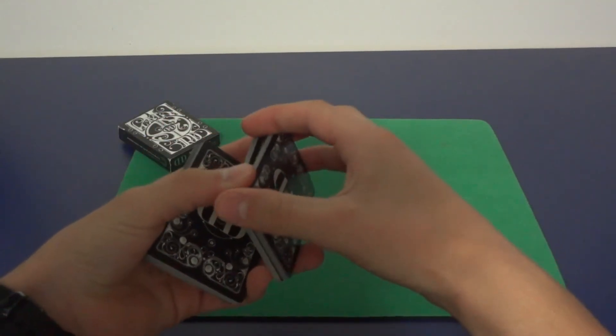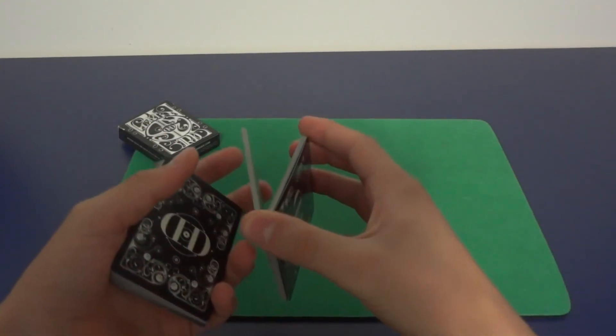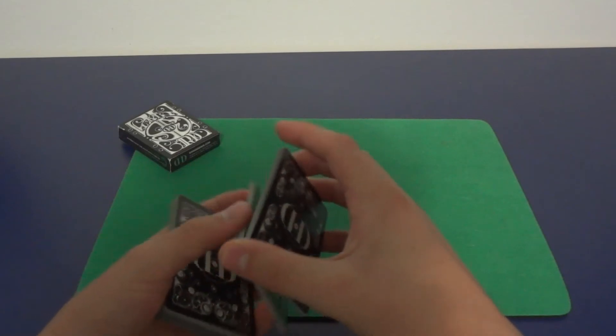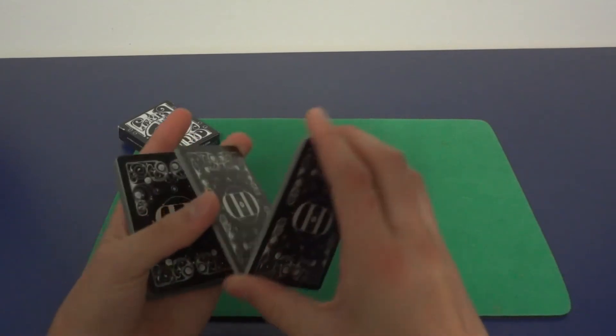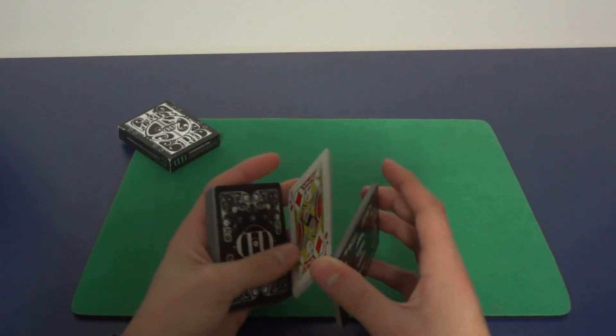With your thumb and your middle finger, you're going to break off about half of that packet, and you can see that both of these will be able to spin. With your thumb, you're going to spin it twice like so.